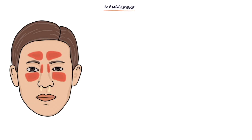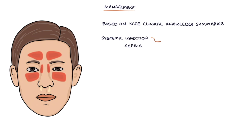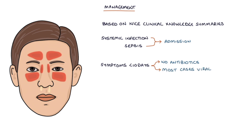Next let's talk about management. The information here is a brief outline based on the NICE clinical knowledge summaries updated in March 2021 — always check the full local and national guidelines when treating patients. Patients with systemic infection or sepsis require admission to hospital for emergency management. NICE recommend not offering antibiotics to patients with symptoms for up to 10 days, as most cases are caused by a viral infection and resolve within 2-3 weeks.